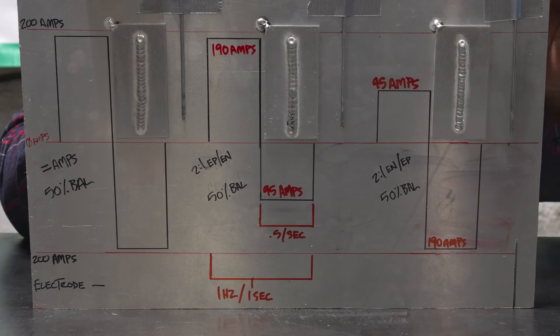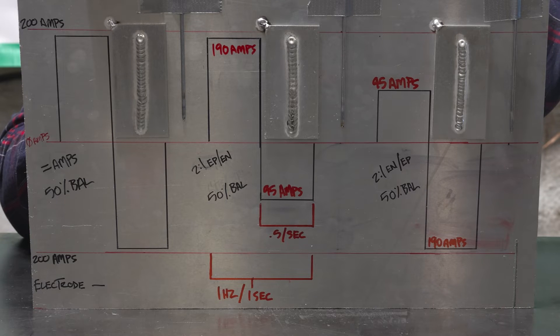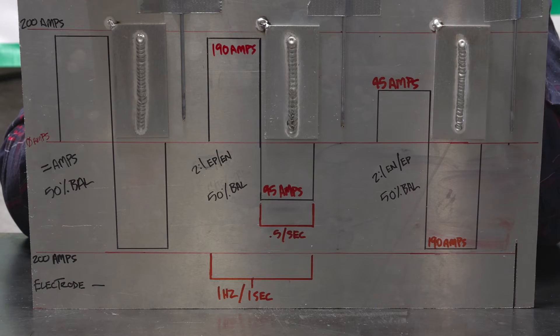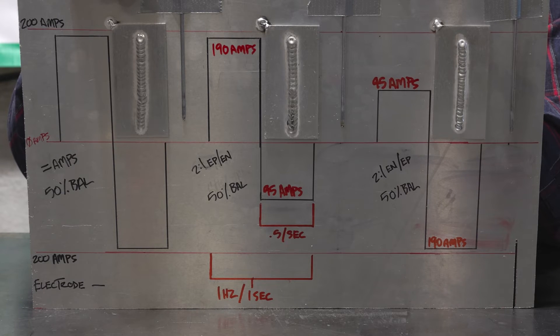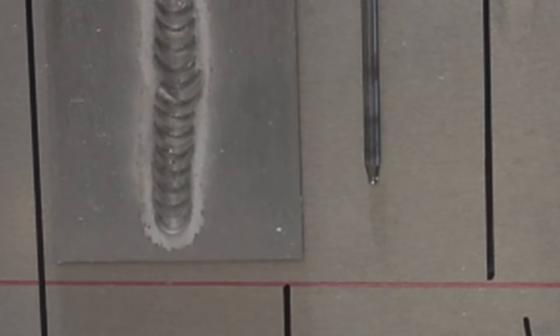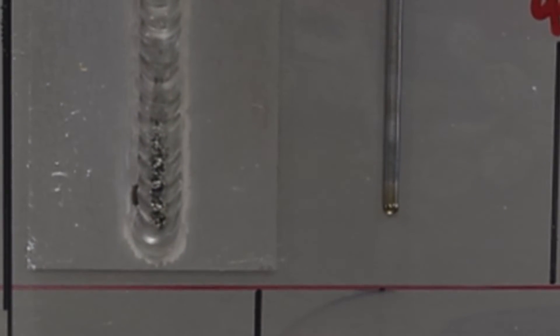So we have our three runs all side by side with the test plate and the tungsten that was used for that run, and we got some really interesting results. On our balanced amplitude output with a 50% balance, you saw we got a pretty decent sized ball. The arc was a little unstable as the tungsten started to ball up, but we had an equal heat input between our two sides of the waveform. Now on our 190 amps electrode positive, 95 amps electrode negative, still 50% balance run, you can see we have a much bigger ball. I think that's due to the overall heat input being biased towards the electrode positive side, so we put a lot more heat into our tungsten on this run than we did on the first run.